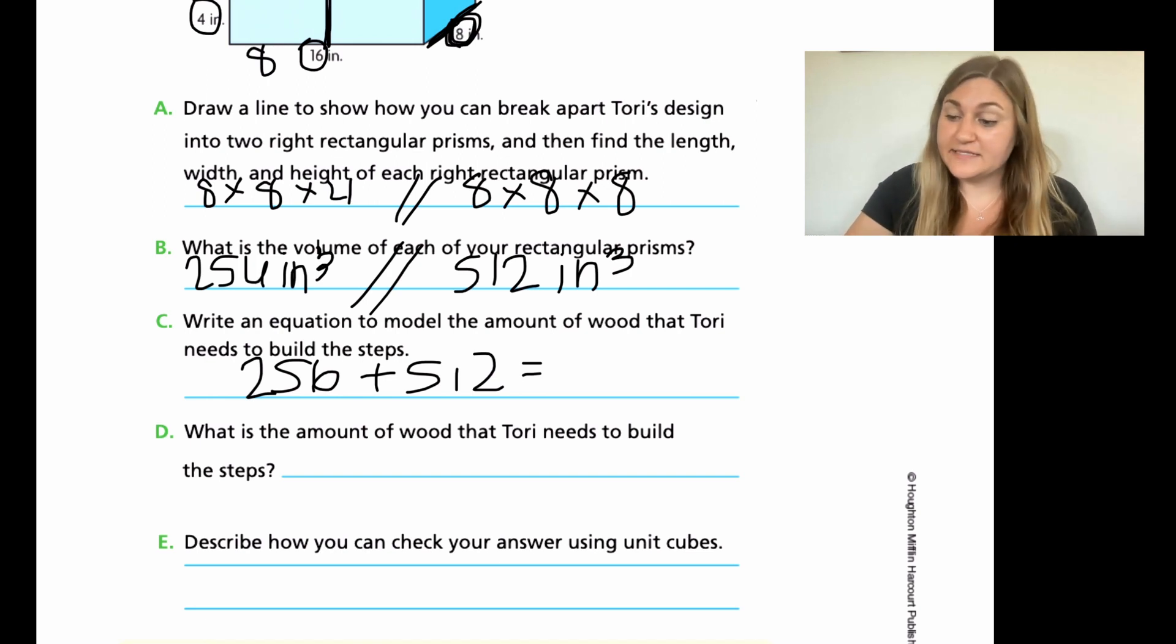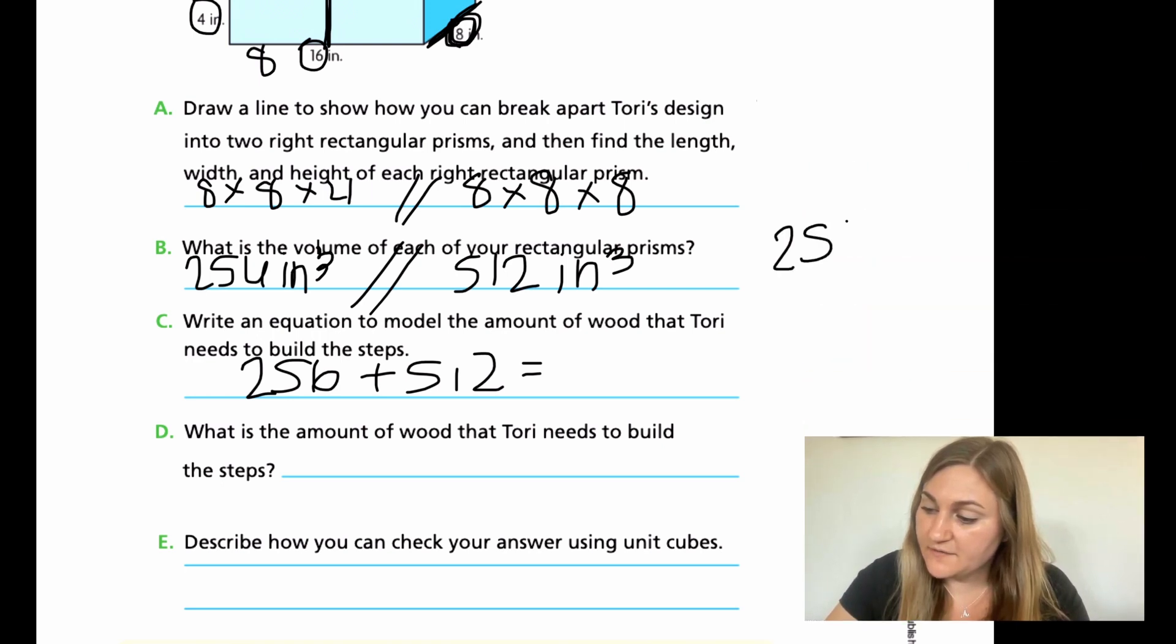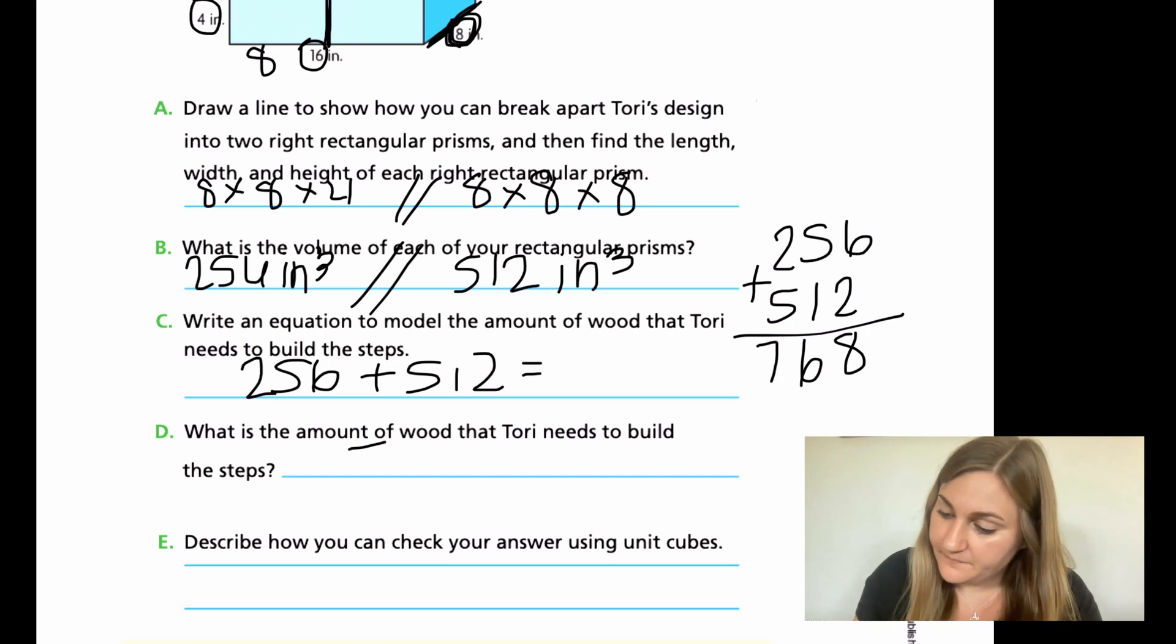Now for D it says, what is the amount of wood that Tori needs to build the steps? So here's where you're actually solving. You're going to now add those two numbers together to find the total volume. Go ahead and solve D here. Coming back. So all we need to do is add these two numbers together. 256 plus 512. So 6 plus 2 is 8, 5 plus 1 is 6, and 2 plus 5 is 7. So the total volume is going to be 768 inches cubed.